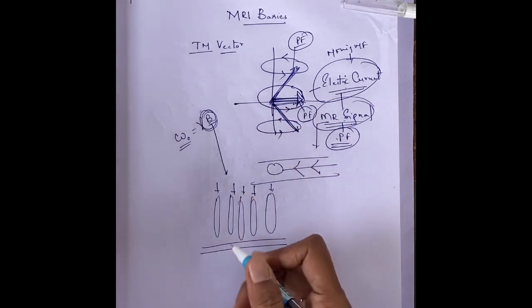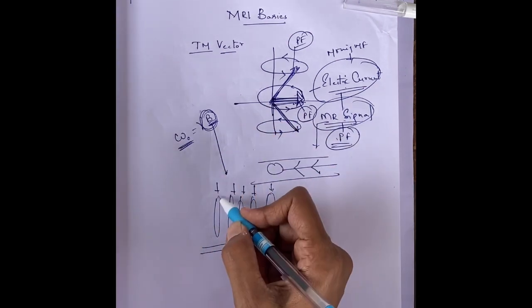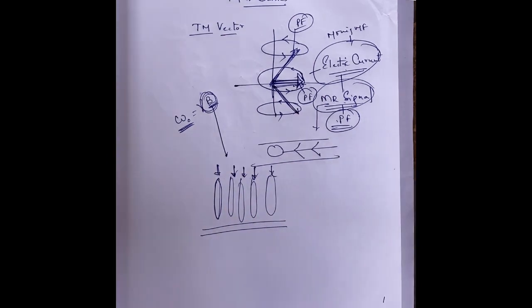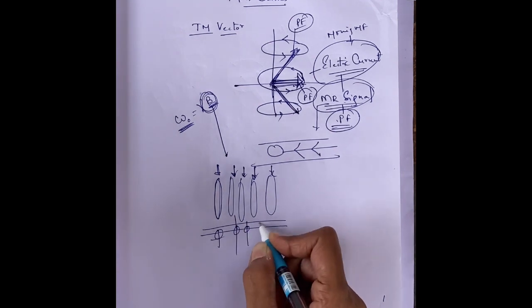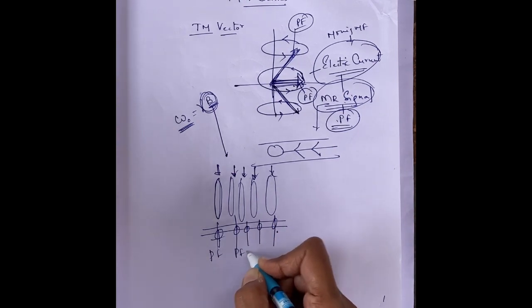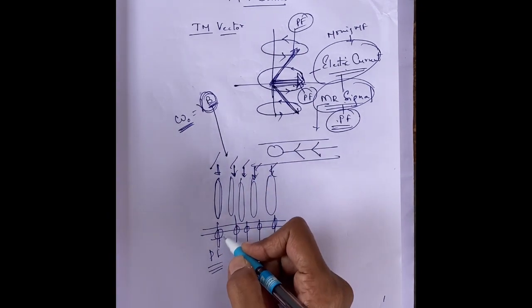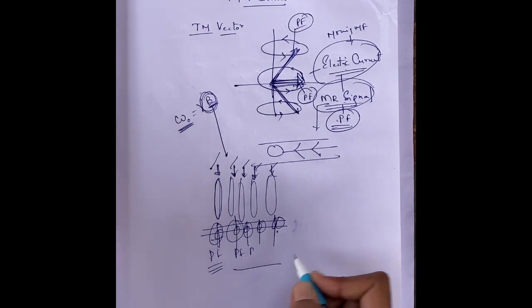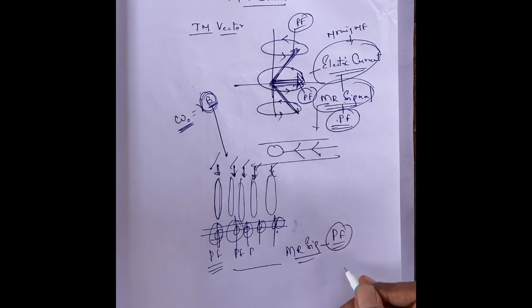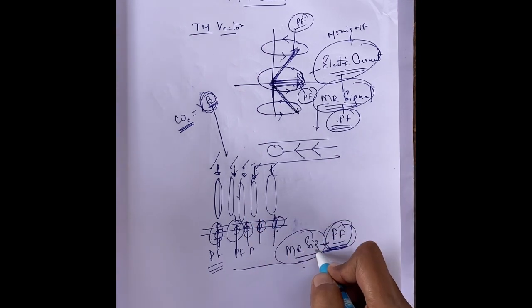At each point, when the magnetic field strength increases, the precession frequency also increases. We are applying a different magnetic field at each section. So the protons in each section which are precessing have a different precession frequency due to the different magnetic field strength. At each point of the cross section, the precession frequency will be different, and in turn the MR signal also has a different precession frequency. By looking at this precession frequency, we can know from which part of the body we are getting the MR signal.